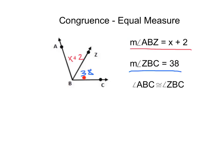Here we've got an angle. Measure of angle ABZ equals x plus 2. We've got ABZ equals x plus 2. ZBC equals 38. We've got that right here. And we're told that angle ABZ is congruent to angle ZBC. That means that ABZ and ZBC, these two angles, have the same measure.